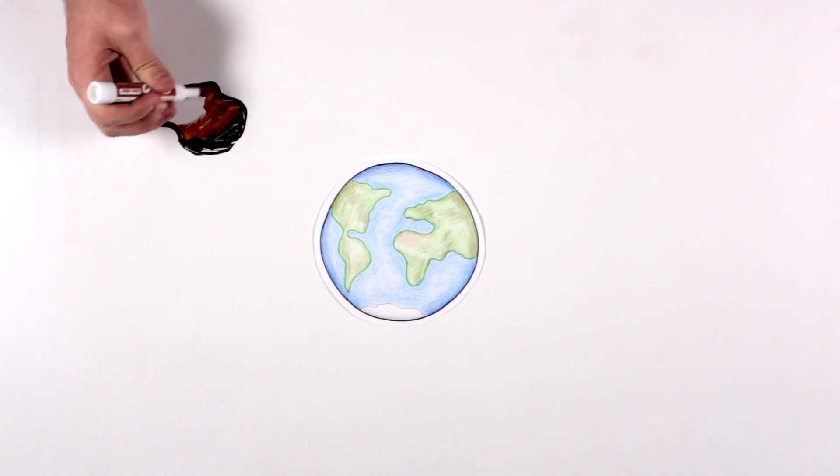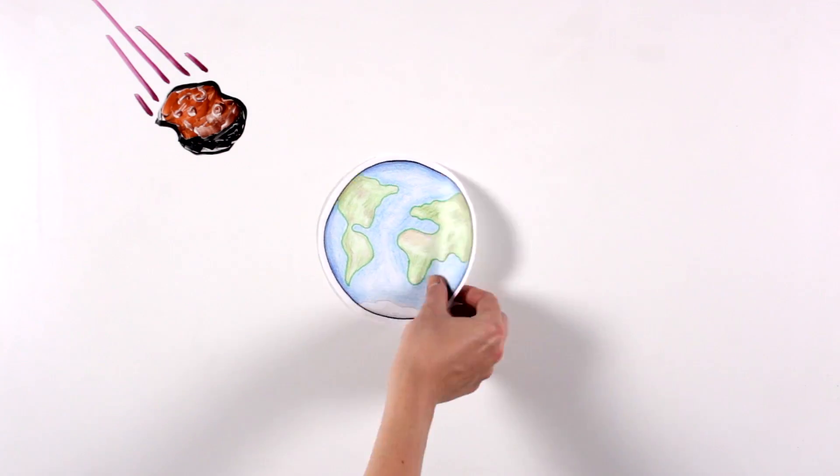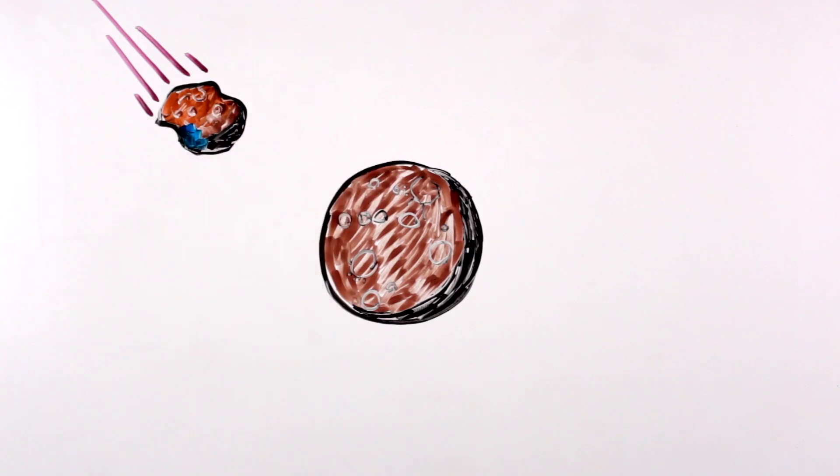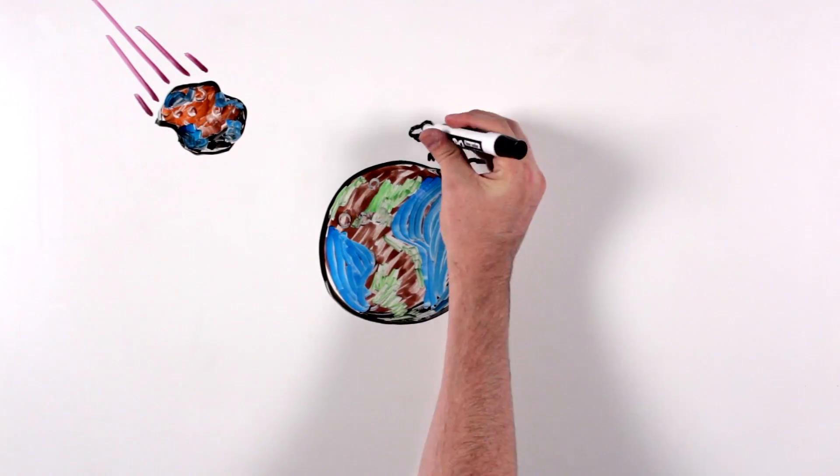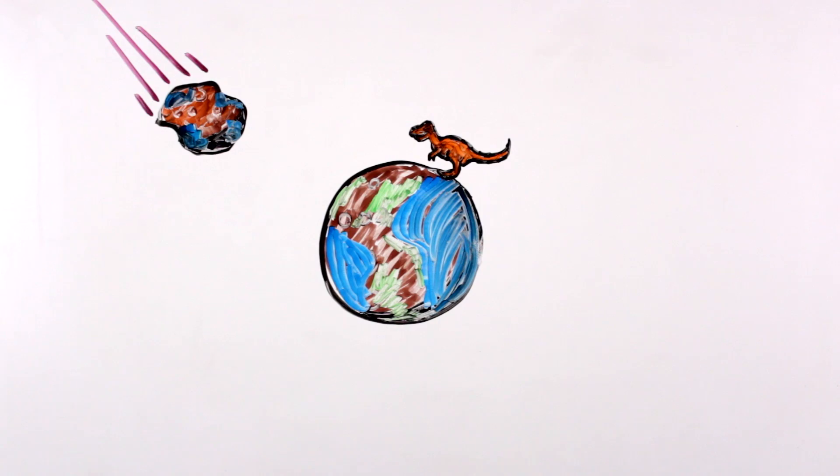Are asteroids threatening to Earth? Not always. Long before asteroids seemed threatening, they brought water and the building blocks of life to early planet Earth. They started off friendly and helped Earth develop life.